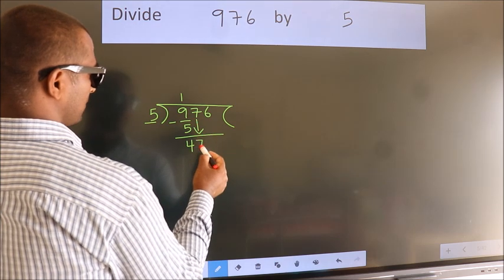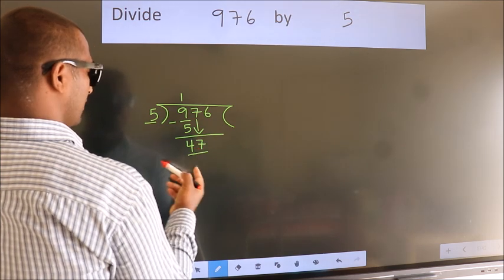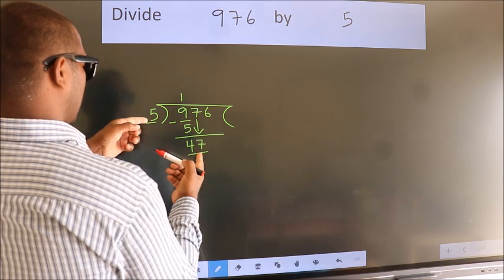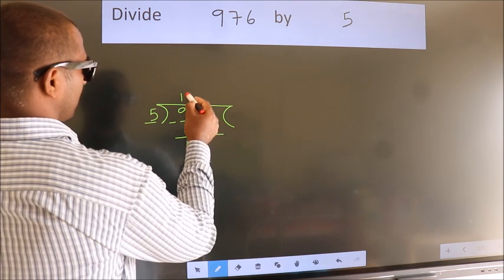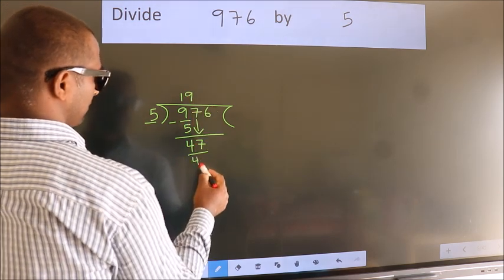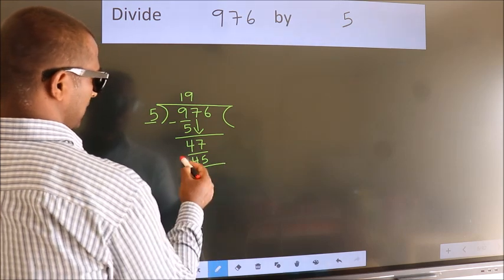So 47. A number close to 47 in the 5 table is 5 nines 45. Now we subtract, we get 2.